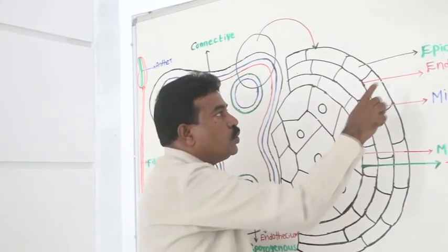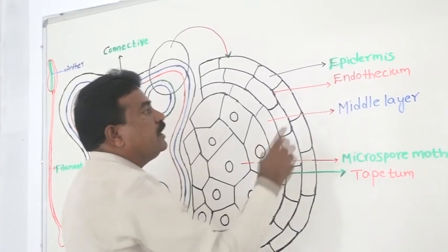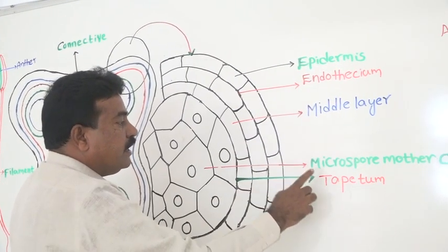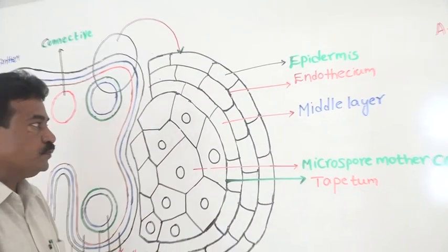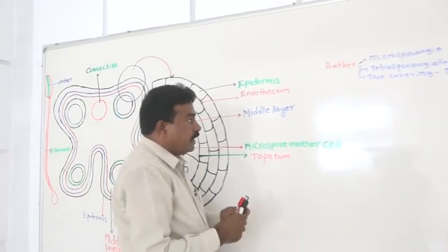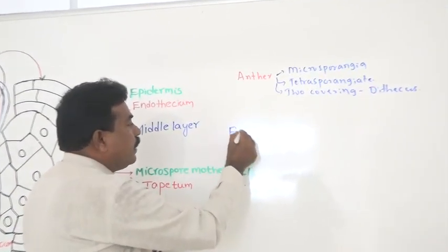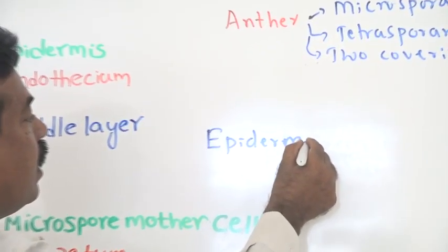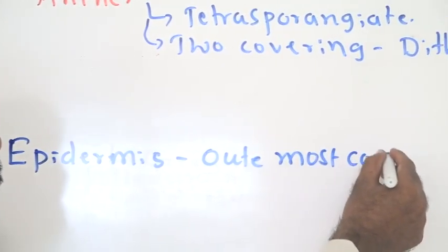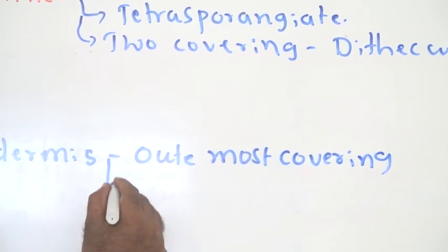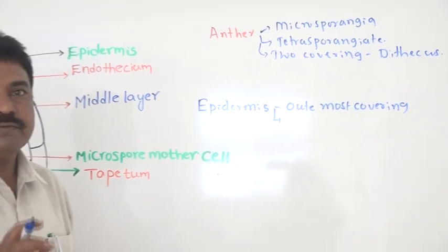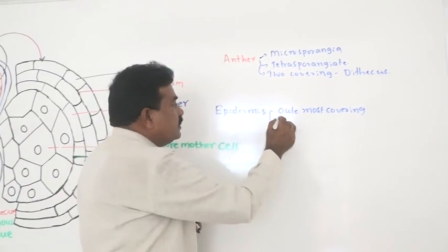If you take an enlarged view of a single microsporangium, it is covered by totally four layers: the outer epidermis, then the endothecium, then the middle layer, and the innermost layer is the tapetum. The epidermis, in all plant body parts, is the outermost covering and is generally a single layer.